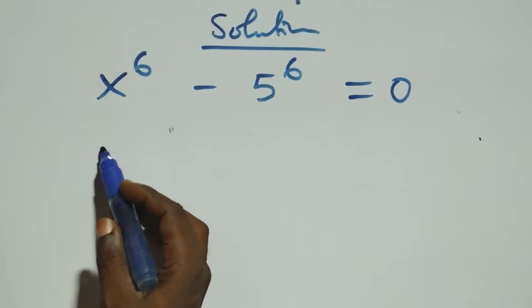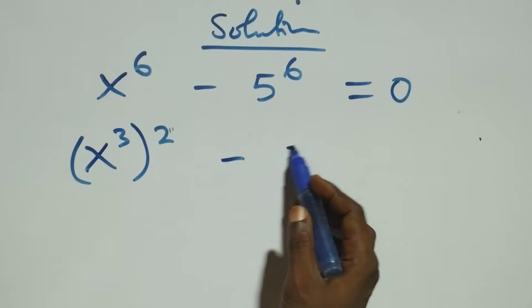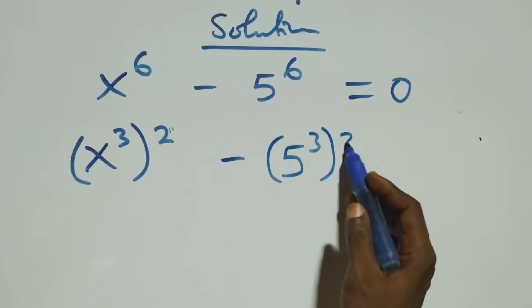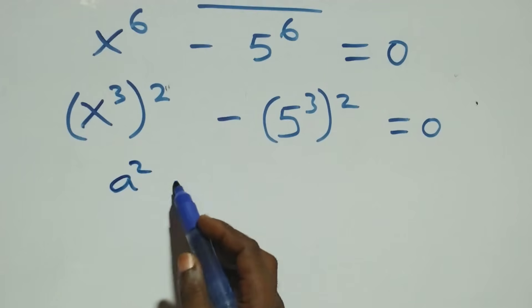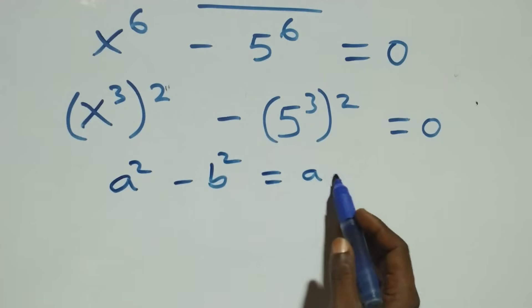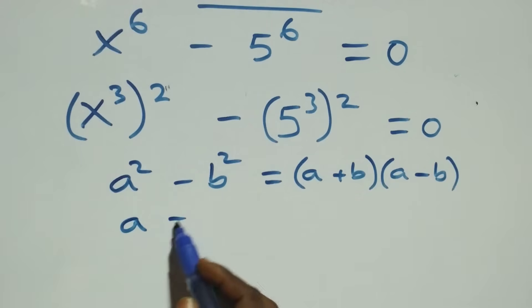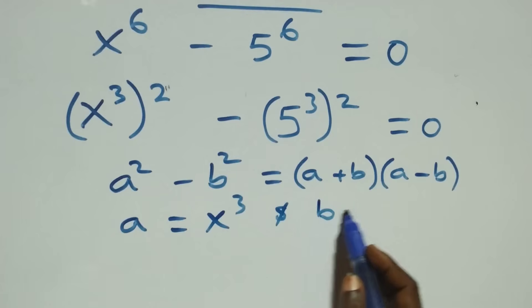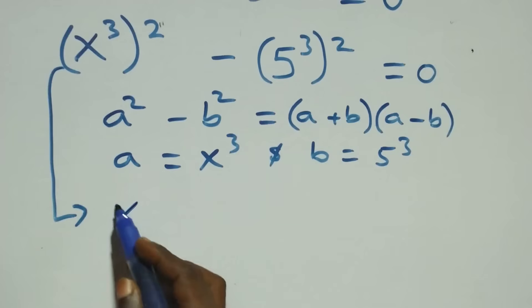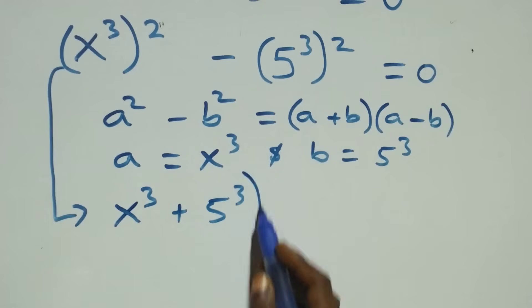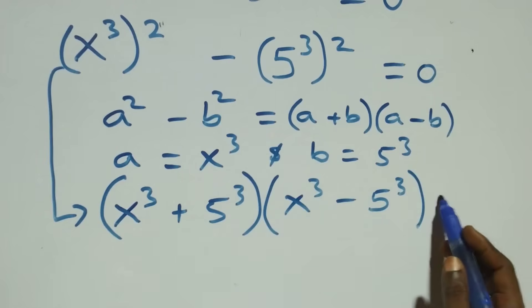The next step, we can express this as x raised to power 3, squared, as 2 times 3 gives us 6, then minus 5 raised to power 3, squared, equals to 0. This follows the difference of two squares: a squared minus b squared equals (a plus b)(a minus b), where a stands as x raised to power 3 and b stands as 5 raised to power 3. This becomes (x³ + 5³)(x³ - 5³) equals to 0.